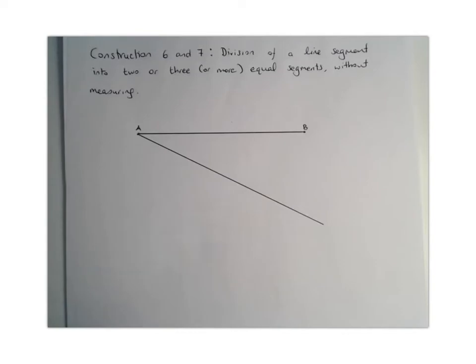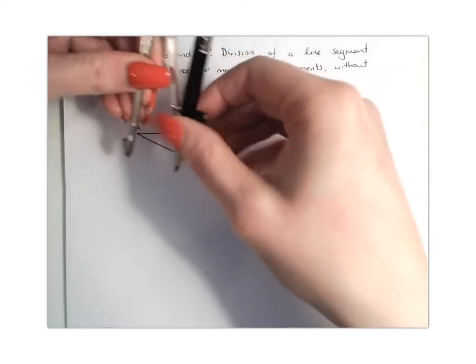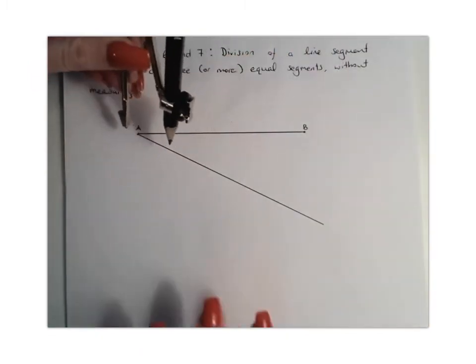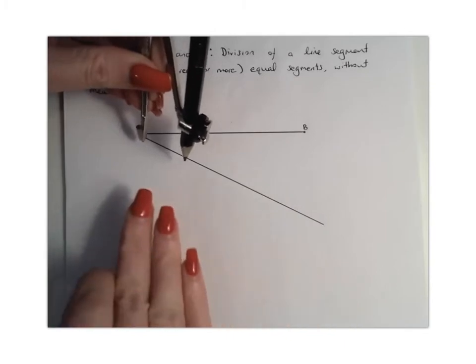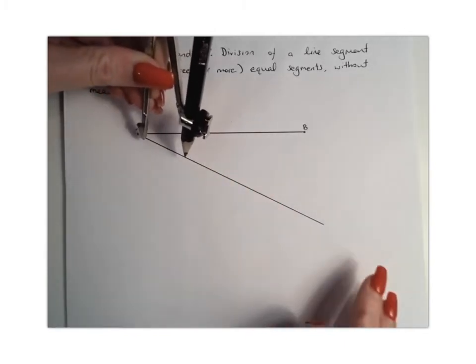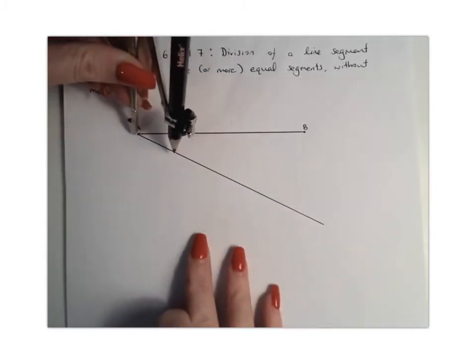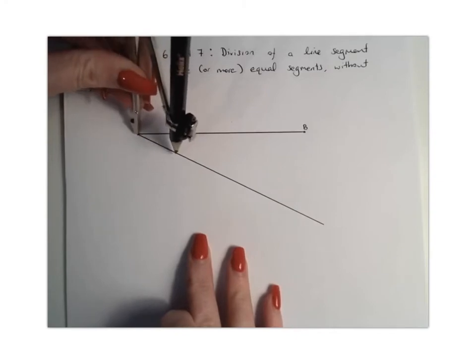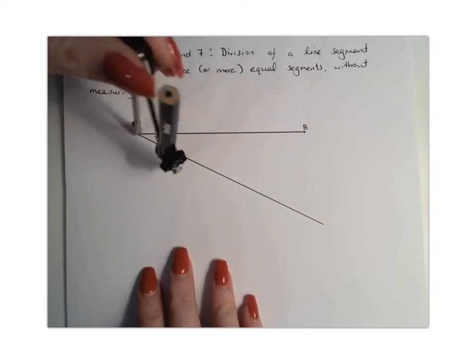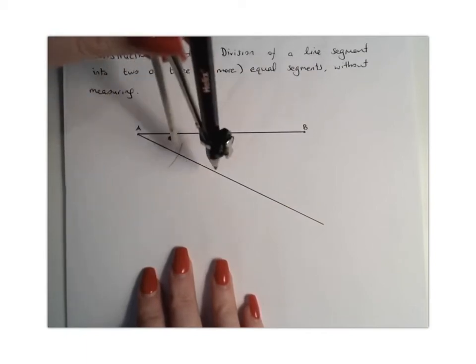What we're going to do next then is we're going to get our compass and we need to make sure we keep our compass the same width once we set it up. So I'm going to stretch out my compass to a particular length, and obviously we're splitting this up into 3 segments, so you want to make sure the 3 arcs are going to fit onto this line. You're going to place your compass at point A, and again keeping the compass the same now for each time, you're going to draw an arc here. So that's 1.